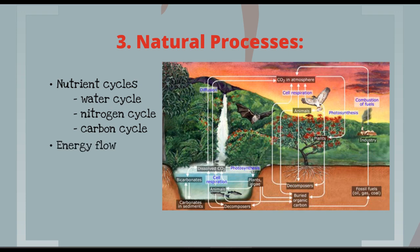Energy flow is also a natural process, and we'll talk more about that later in this lecture. Physical processes like erosion can change and shape ecosystems. Biological processes like decomposition can also help shape and change ecosystems. Evolution itself is a natural process that clearly shapes how ecosystems change, and especially their communities over time.